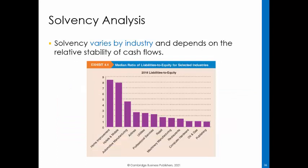Companies in the restaurant, agricultural implement, commercial printing, and home improvement industries have a large proportion of debt. This is typically because companies in these industries have relatively stable cash flows and can therefore support a higher debt level. At the lower end of debt financing are companies such as newspapers and retail clothing stores whose cash flows are less predictable.